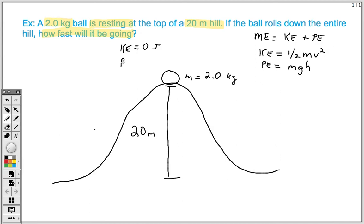Now our potential energy at the top, this we can solve for. Because it's our object's mass times gravity times height. We know that the ball's mass is 2 kilograms. We know that gravity is always 9.8 meters per second squared. And we know that the hill's height is 20 meters. So we can solve for this. 2 times 9.8 times 20 gives us 392 joules to begin with.